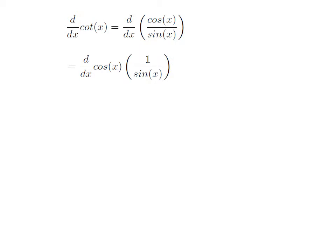Differentiation of cosine of x divided by sine of x with respect to x can also be written as differentiation of cosine of x into 1 divided by sine of x, with respect to x.